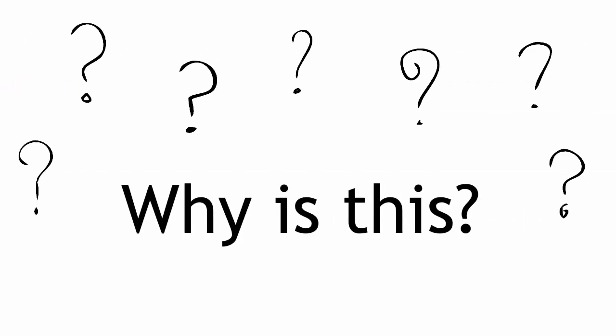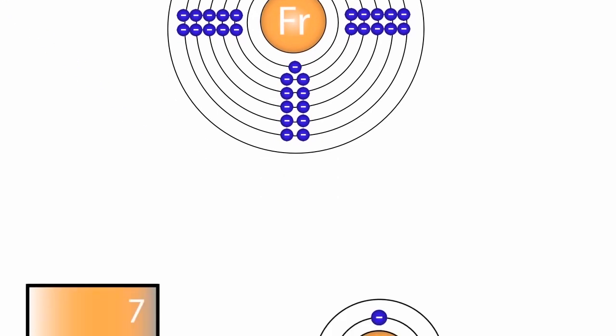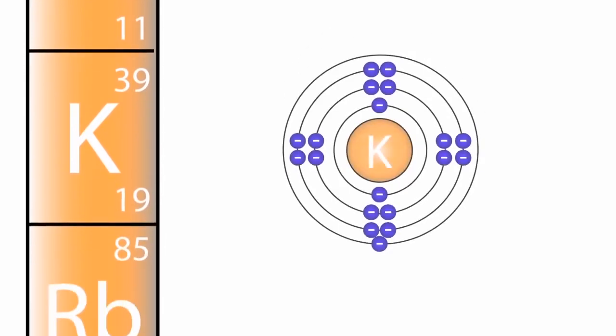Why is this? Two reasons. Firstly, the outer electron they have is easily lost. Secondly, as the atom gets bigger they find it increasingly easy to lose the electron.